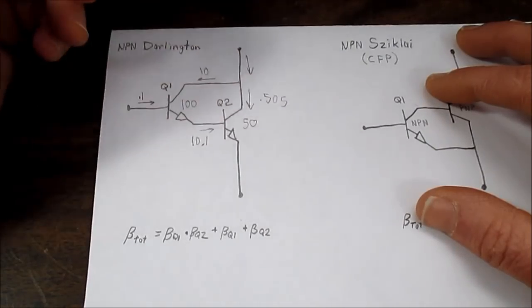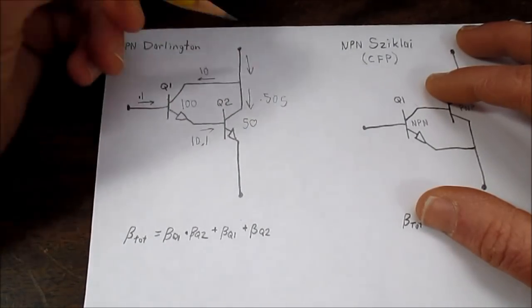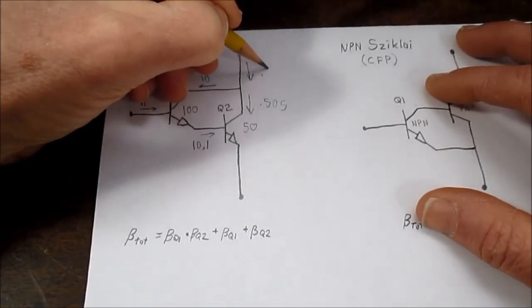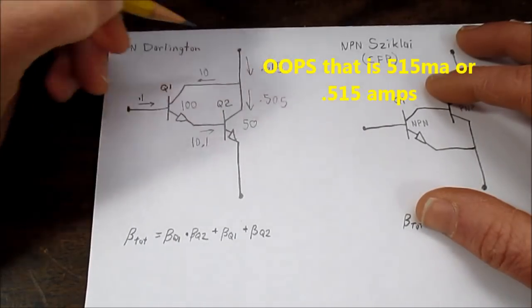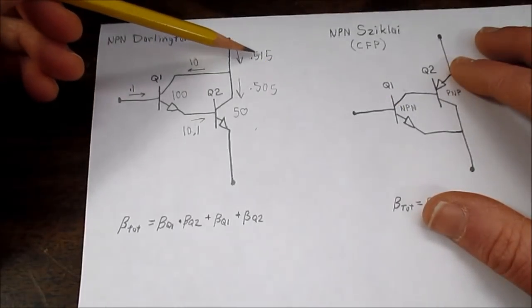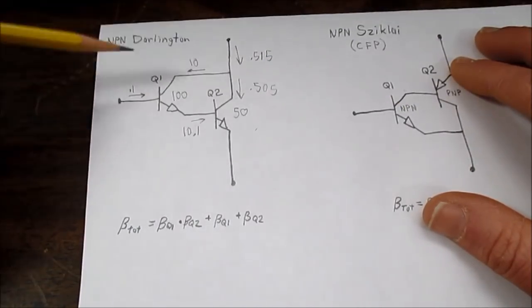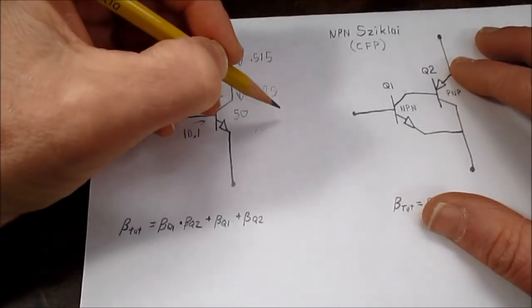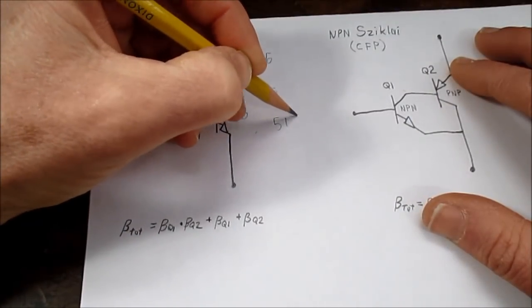So the total current being drawn is 0.515 amps. So to find the beta of this circuit, we take this divided by this, and it ends up being 5150.